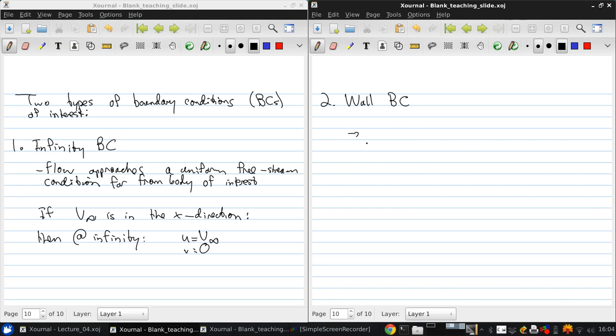The other is the wall boundary condition. And this one's pretty logical. It just says flow cannot penetrate the surface of an object. So in viscous flow, the velocity at a wall must be zero. This is the no-slip condition that we talked about a little bit earlier on. But in an inviscid flow, that's not true.